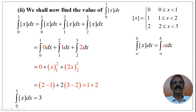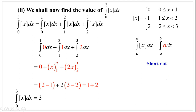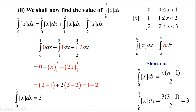Therefore, the value of the integral from 0 to 3 of [x] dx equals 3. The shortcut formula for this type of problem is: the integral from 0 to n of [x] dx equals n(n−1)/2. Therefore, the integral from 0 to 3 of [x] dx = 3(3−1)/2 = 3×2/2 = 3.